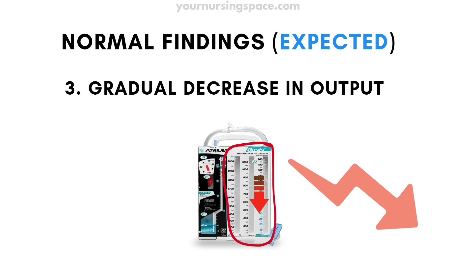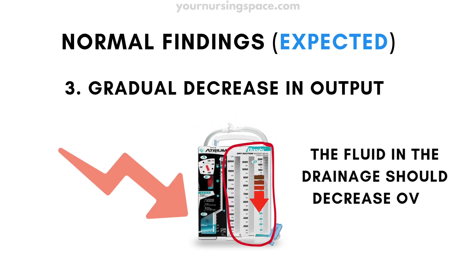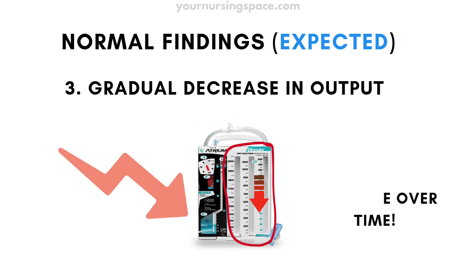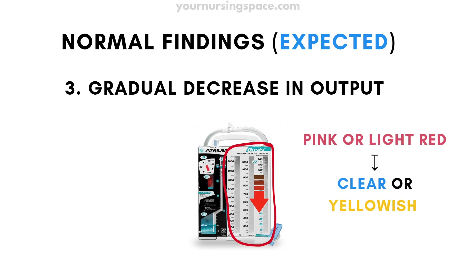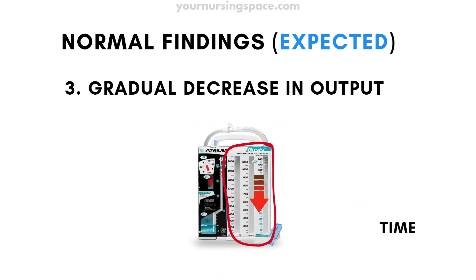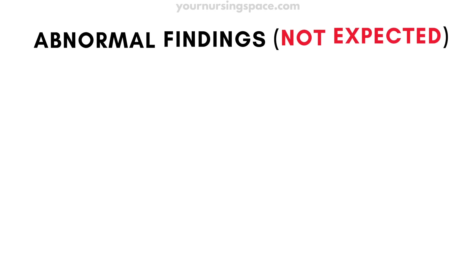Also expected is a gradual decrease in drainage output — the amount of fluid coming out should decrease over time. Drainage should look pink or light red at first, then turn clear or yellowish.